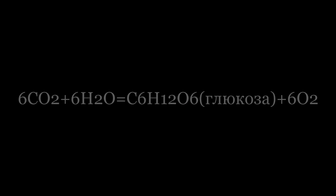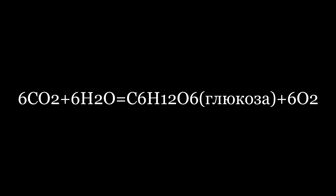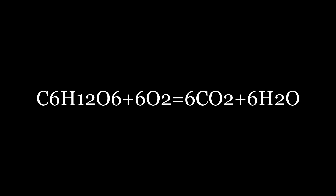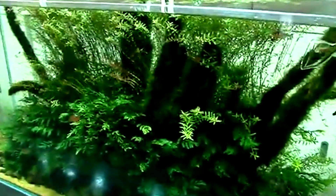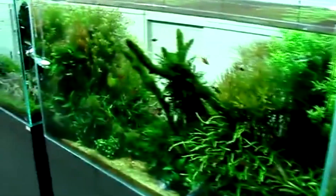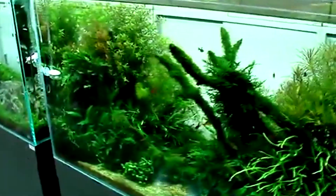Формулу фотосинтеза можно представить следующим образом. В темноте происходит обратный процесс. Из вышесказанного можно сделать вывод, что СО2 – это основной строительный материал организма растений. Растения в аквариуме при грамотной подаче СО2 становятся красивыми, здоровыми и быстрорастущими. В процессе фотосинтеза растения выделяют кислород – О2. Этот процесс в народе называют пузырянием или перлингом растений.